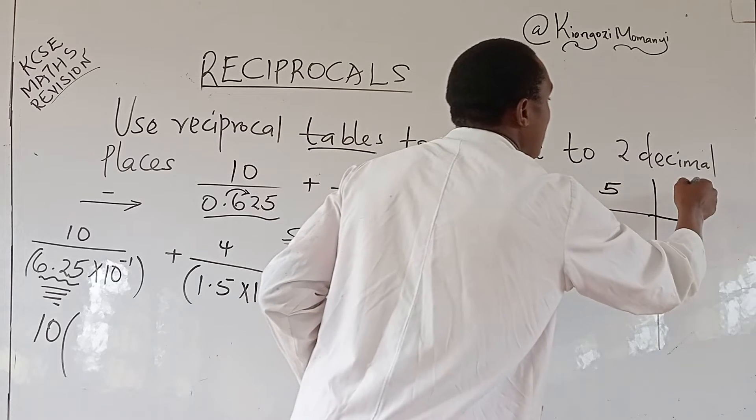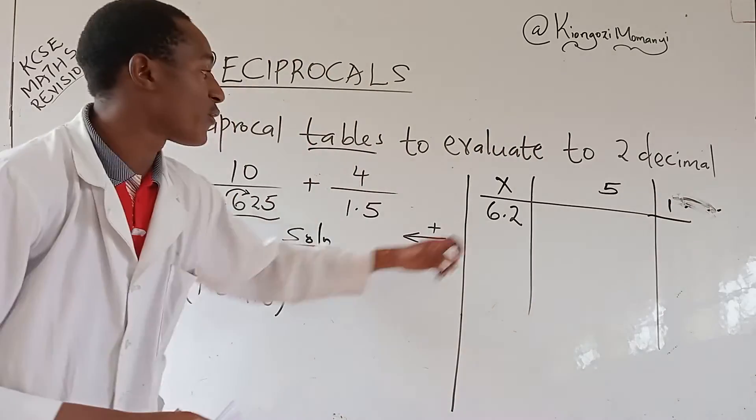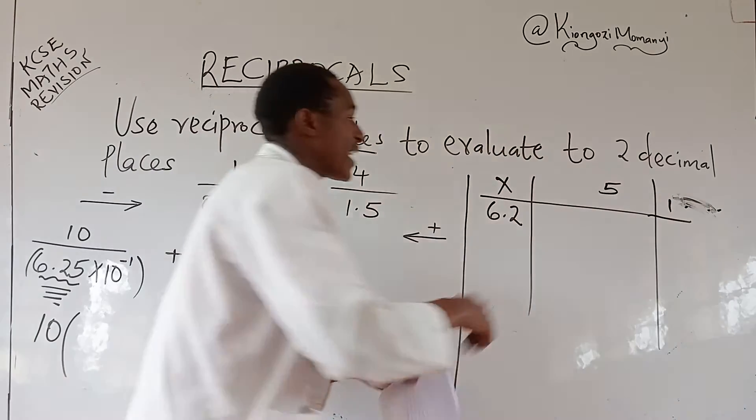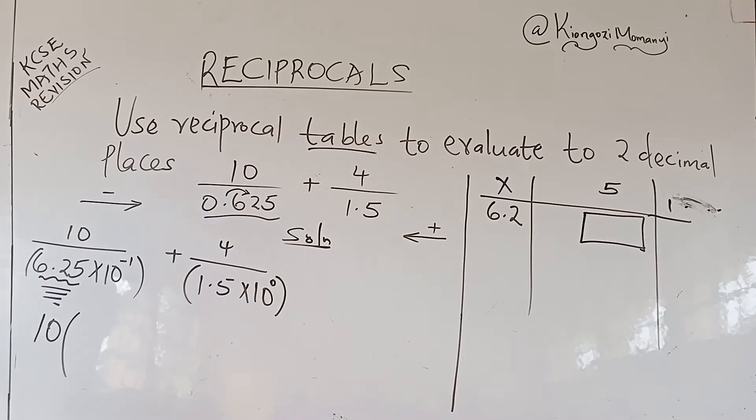There is also another column there, but we are not interested in it. 1, 2, 3, 1, like that. So I am looking for 6.2. Then I need 5. The value I will get there, I will take it as my reciprocal.